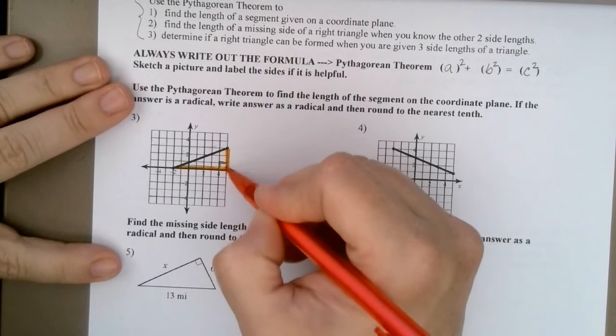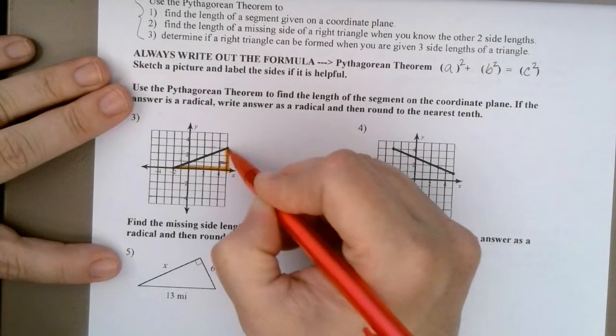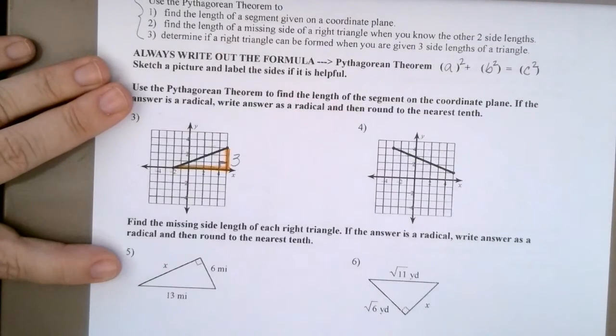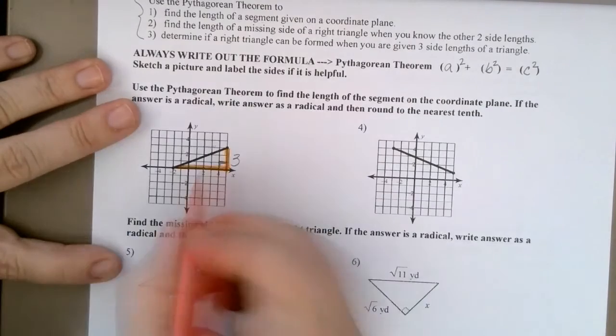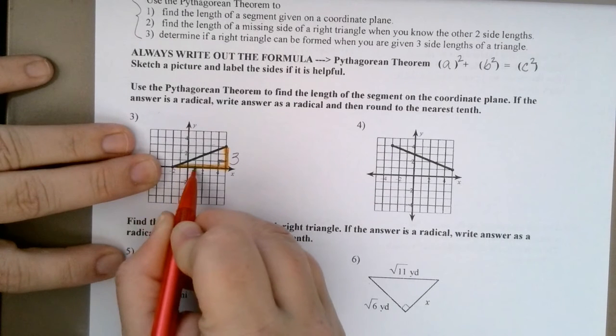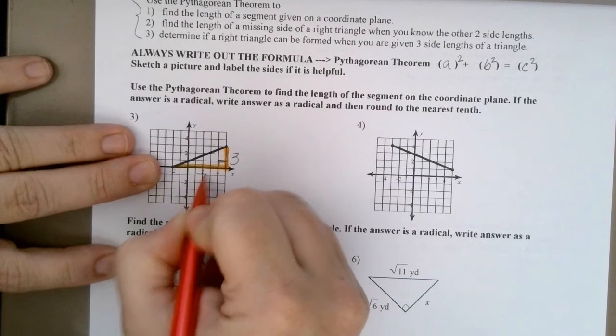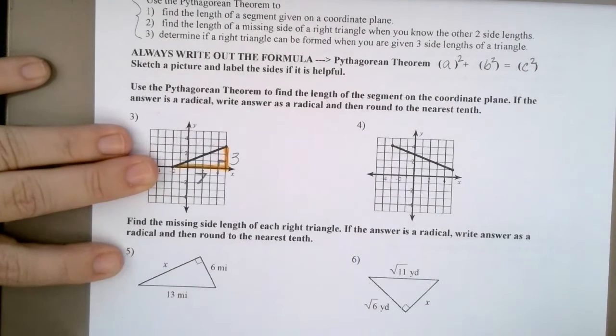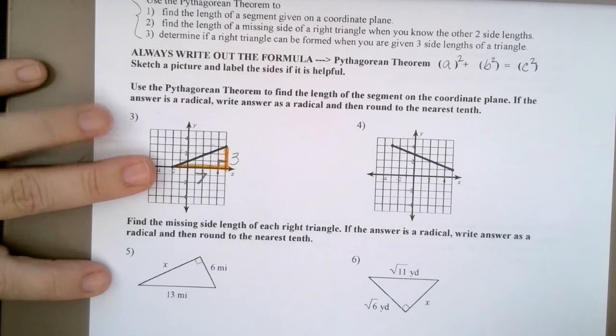And why do I like those? Well, because this line or this side, I can count is three units long. Right? And how long is this side? One, two, three, four, five, six, seven units long? Are those legs, hypotenuse, what are they? Legs.